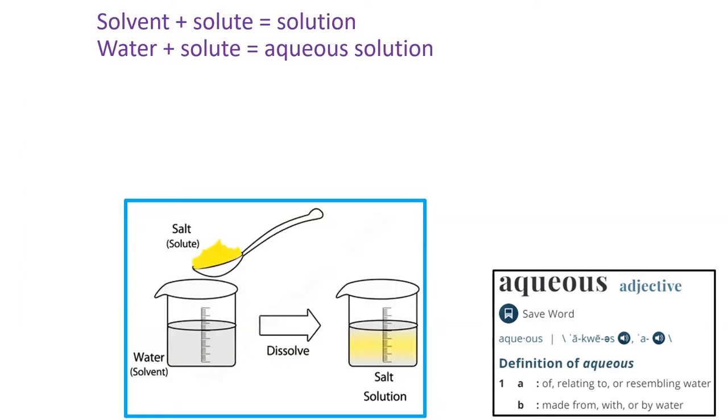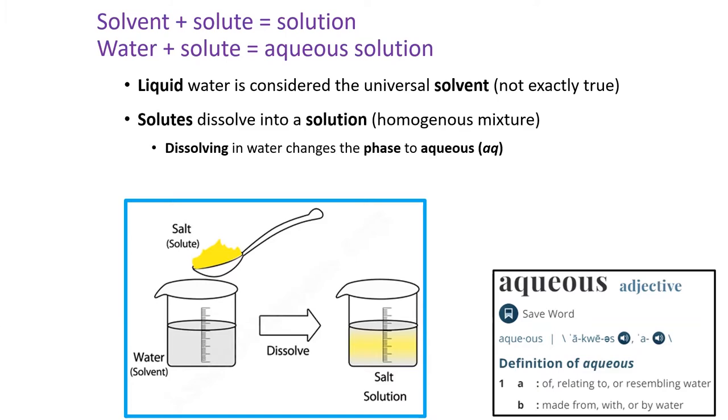This slide introduces some important vocabulary for solutions, summarized in the image with a blue border. A solvent is a liquid, commonly water. A solute is something that will dissolve, often a solid, like an ionic salt. When a solute meets a solvent, it mixes evenly with the solvent to form a homogenous mixture called a solution.